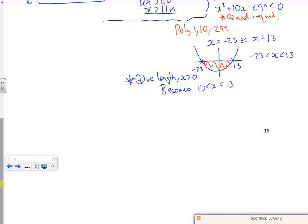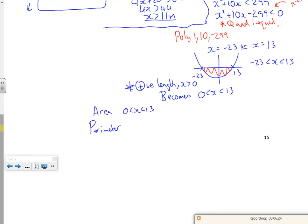So that's for the area. So this is the area. So I've got something that says the area is 0 is less than x is less than 13. But my perimeter is x is greater than 11. So what I need to look at now is the overlap. So it works for both.